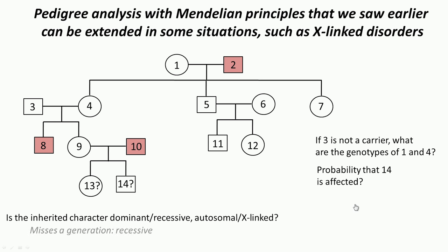Let us look at how to solve this. As you can see, this disease misses a generation completely. Persons 4, 5, and 7, who are offspring of 1 and 2, completely miss the disease. If it were dominant, this kind of skipping would not arise, because as long as one gene is dominant, the disorder will manifest. Therefore, it is most likely recessive — that will happen only if it is a recessively inherited disorder.